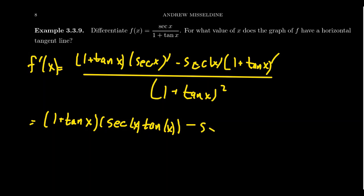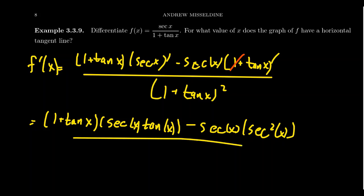So we get secant of x times tangent of x, minus secant of x times the derivative of (1 + tangent of x). The derivative of 1 is 0 so it disappears, and the derivative of tangent is secant squared of x. This all sits above (1 + tangent of x) squared. And so here we have our derivative fully calculated.